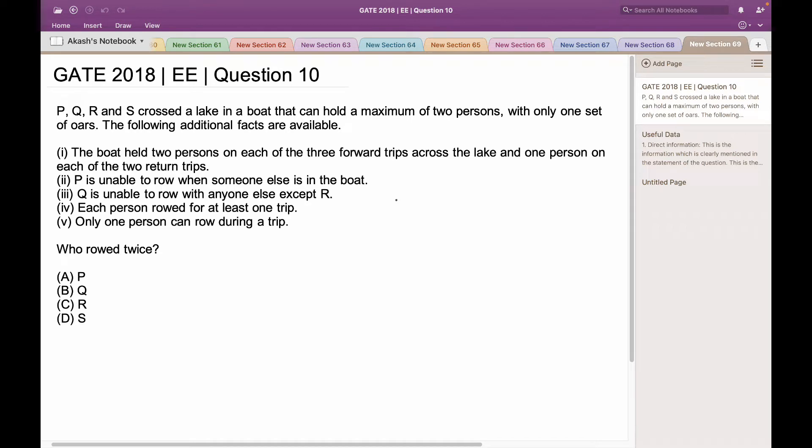First, the boat held two persons on each of the three forward trips across the lake and one person on each of the two return trips. P is unable to row with anyone else in the boat. Q is unable to row with anyone else except R. Each person rowed for at least one trip. Only one person can row during a trip. Who rowed twice?